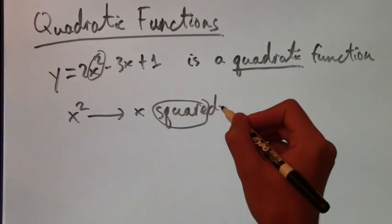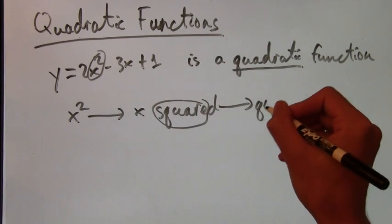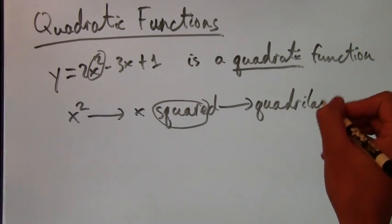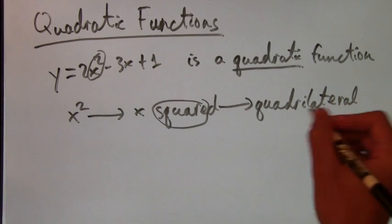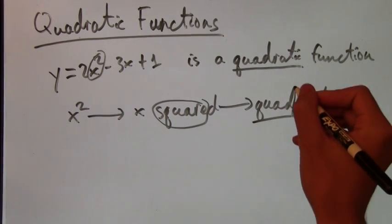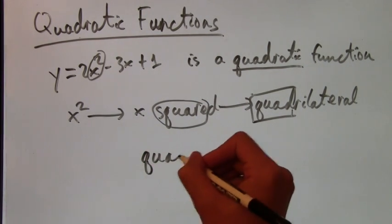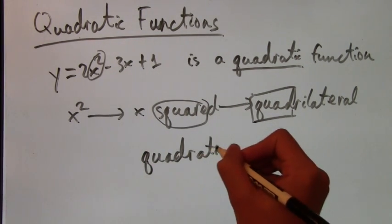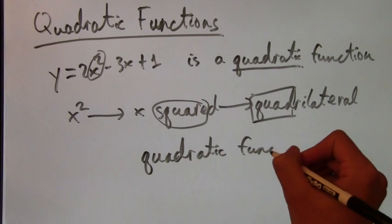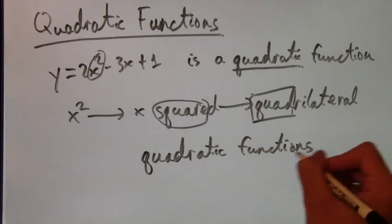Well, quad in quadrilateral is the same as the quad in quadratic function. So that's why they're called quadratic functions, because for it to be a quadratic function, there's got to be an x squared somewhere in there.